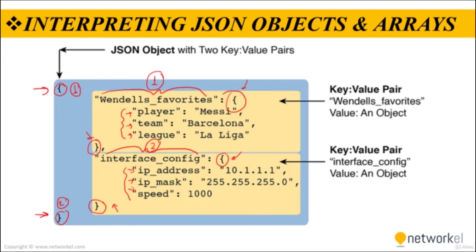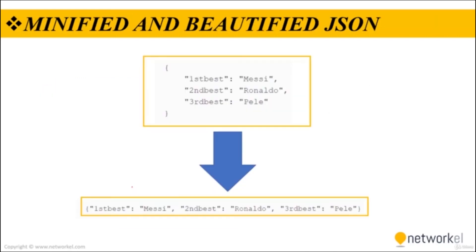The JSON example in this slide shows how JSON can nest objects and arrays — that is, JSON puts one object or array inside another. Much of the JSON output you will see as you learn more about network automation will include JSON data with nested arrays and objects.